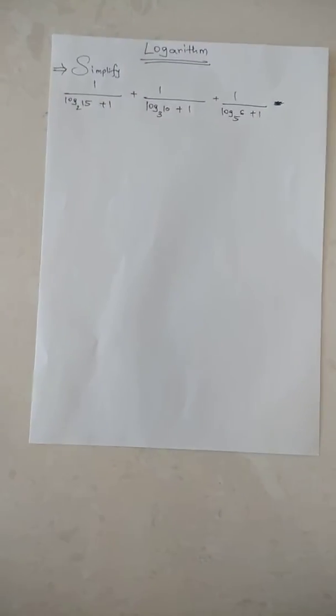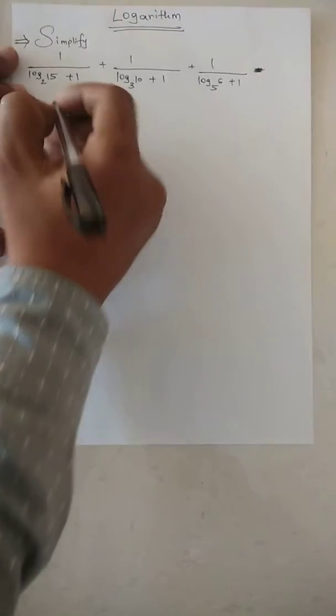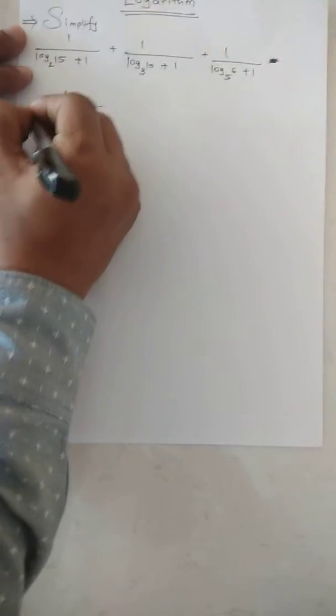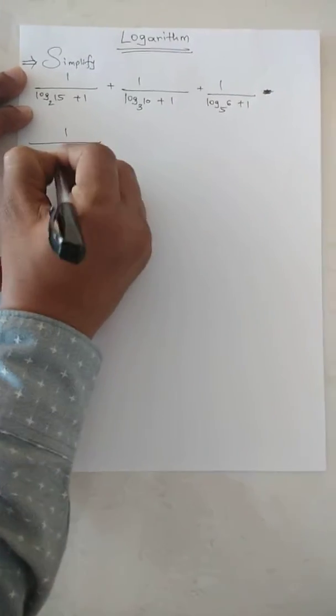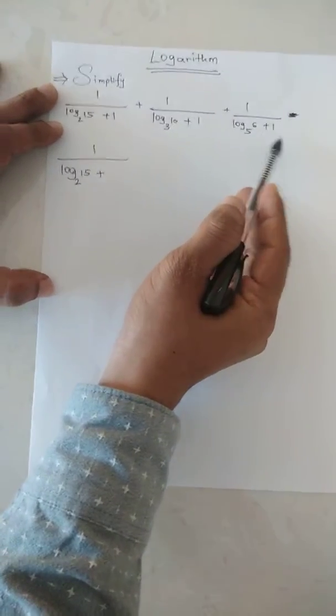Hello friends, today's topic is logarithms. We have to simplify this log question. The first thing is 1 over log base 2 of 15, plus... Now everywhere, plus 1 is there in the denominator, so we have